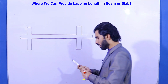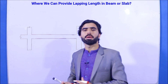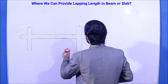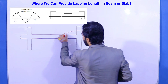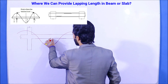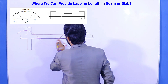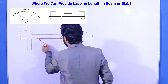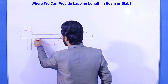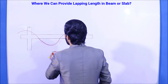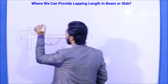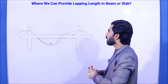As we discussed in many videos, the bending moment is maximum at the mid-span. The bending moment diagram shows positive bending moment at mid-span and negative bending moment near supports. This is an important concept to understand before determining where to place lapping length.